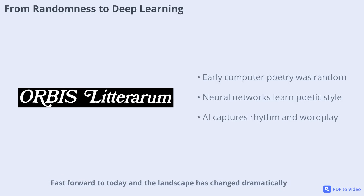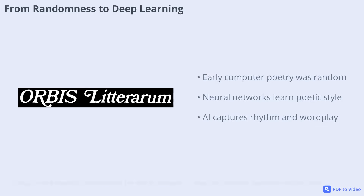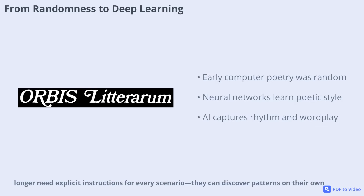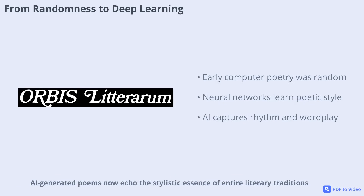Fast forward to today and the landscape has changed dramatically. Artificial neural networks can learn from vast collections of poetry, capturing not just vocabulary, but also style, rhythm, and even subtle wordplay. This shift from rule-based programming to machine learning means that computers no longer need explicit instructions for every scenario — they can discover patterns on their own. As a result, AI-generated poems now echo the stylistic essence of entire literary traditions, opening up new ways to study and appreciate poetry.